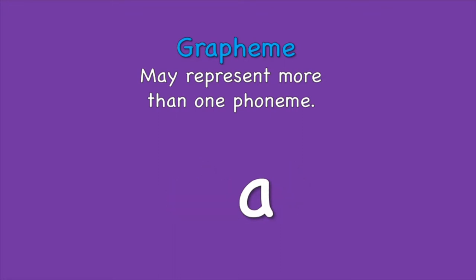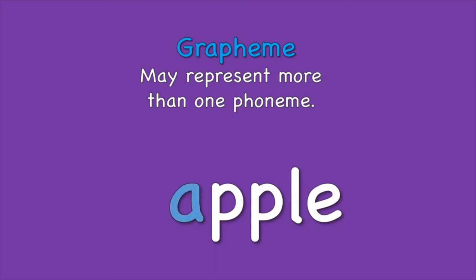A grapheme may represent more than one phoneme, such as the letter a in apple, glass or lady.